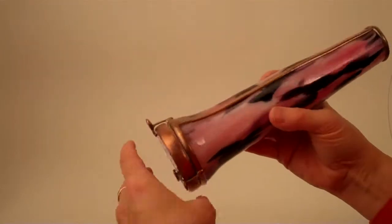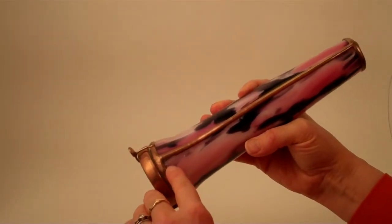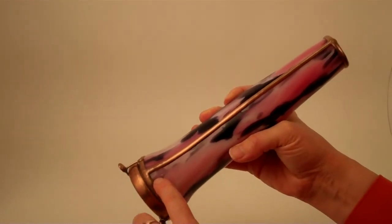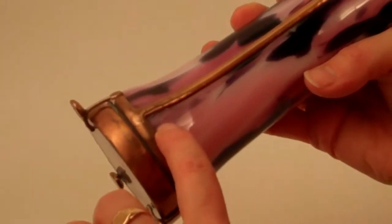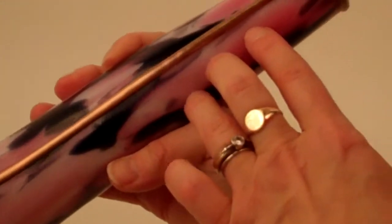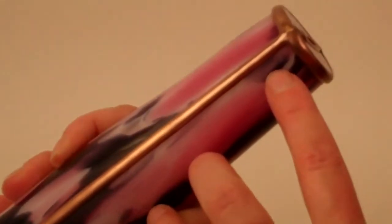Once Charles has the kaleidoscope complete, he does sign it and number it by etching directly into the glass. This is number two of eight, C.S. Karadimos, 2012.